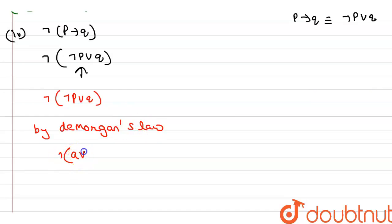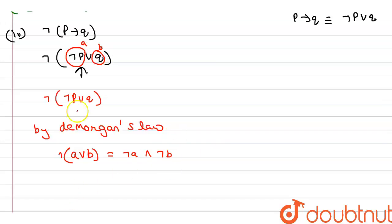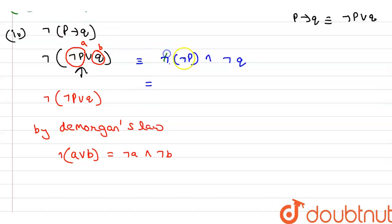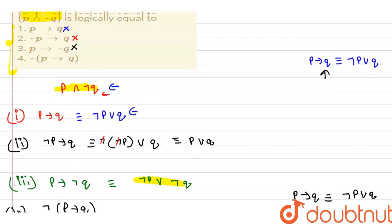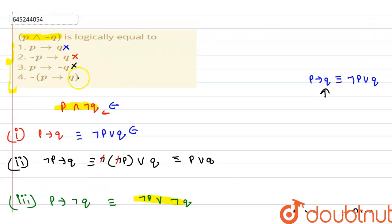By De Morgan's law, negation of negation a or b equals negation of a and negation of b. Here a is negation p and b is q, so we get negation of negation p and negation of q. The double negation on p cancels out, giving us p and negation of q, which is equivalent to our original statement. So option four is the correct answer.